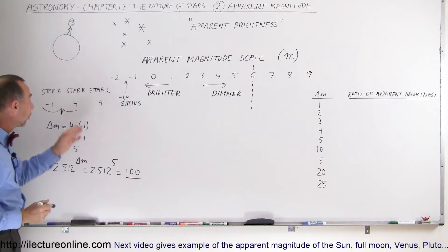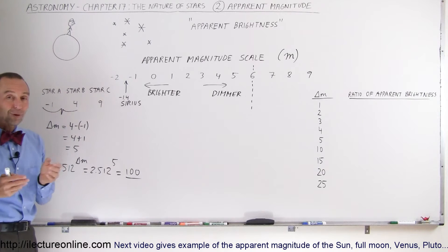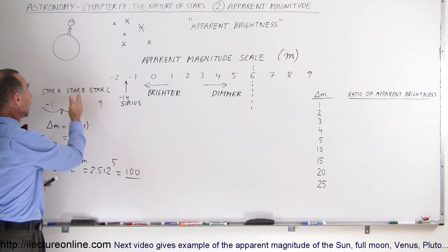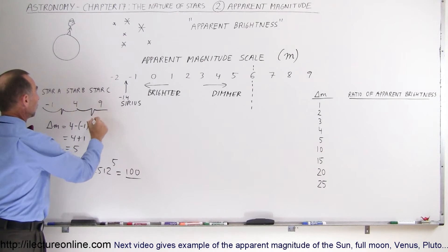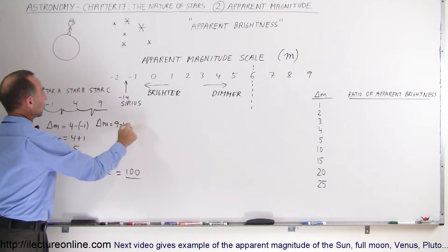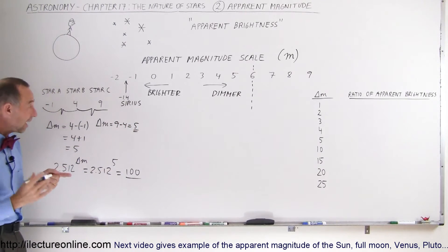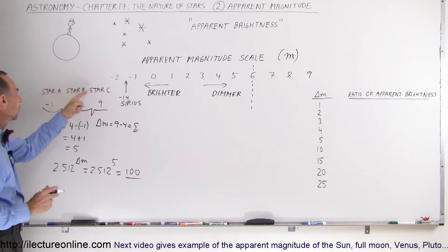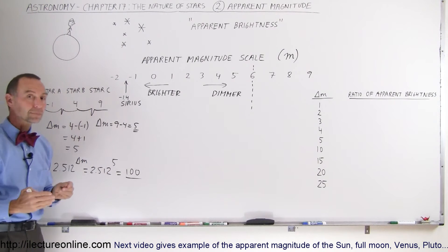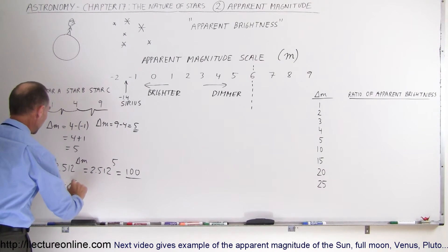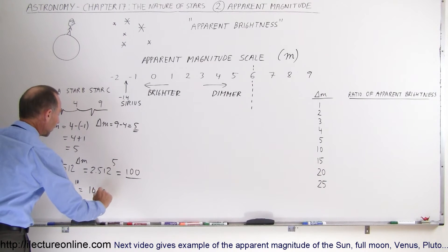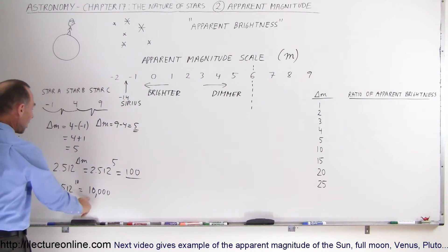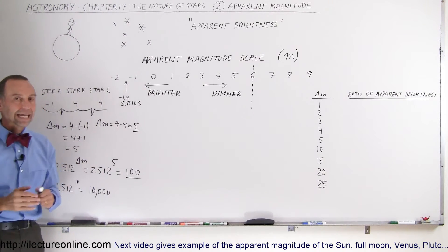How much brighter is Star B compared to Star C? The difference in magnitudes delta M here would be 9 minus 4, which is 5. Since the difference in magnitudes is 5, Star B is therefore 100 times brighter than Star C. Now how much brighter is Star A compared to Star C? The difference in magnitudes is 10, so we take 2.512 raised to the 10th power, which gives us 10,000. Another way of looking at it: it's twice 5 magnitudes, so it's 100 times 100, which is 10,000. Star A is 10,000 times brighter than Star C.